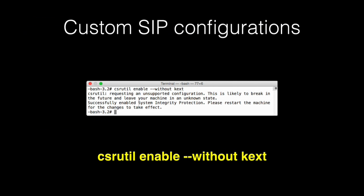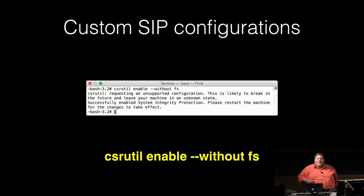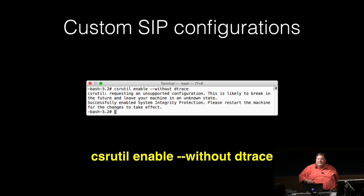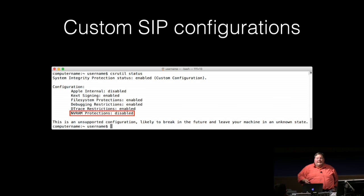It is also possible to enable SIP protections while selectively disabling parts of it by adding flags to the csrutil enable command. All require being booted from recovery. For example, there is a command to enable SIP while allowing installation of unsigned kernel extensions, a command to enable SIP while disabling file system protections, a command to enable SIP while disabling DTrace restrictions, a command to enable SIP while disabling debug restrictions, and a command to enable SIP while disabling restrictions on writing to NVRAM. When you run csrutil status, you should see the other protections listed as enabled while the specific protection you indicated is disabled.